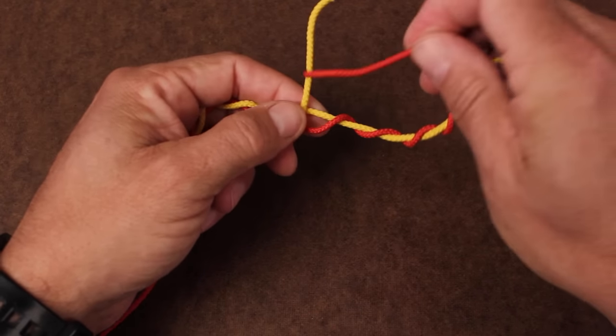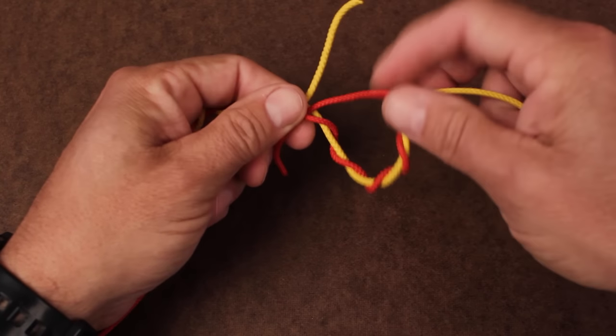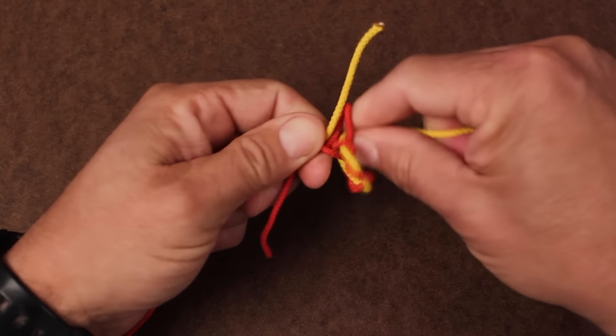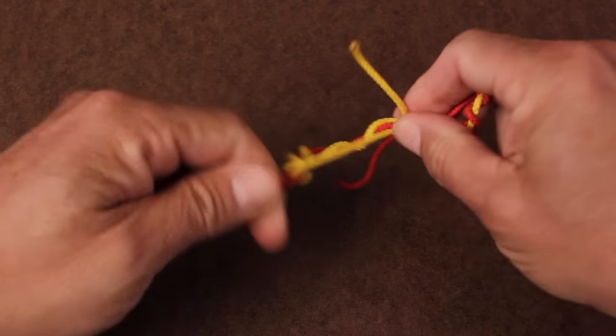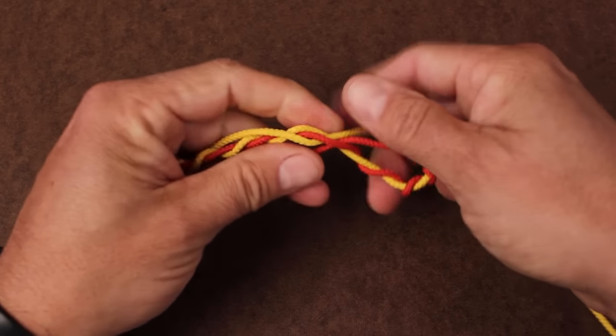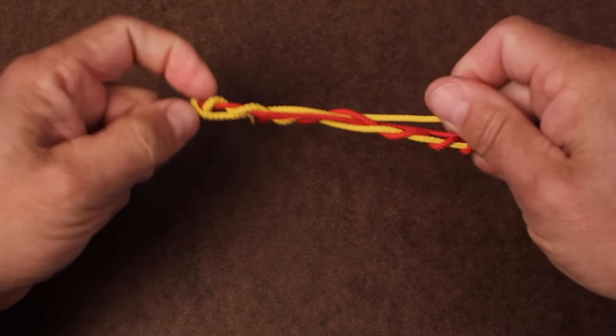Then run the tag end through the open hole at the intersection in the opposite direction as the first tag. While making sure the tags don't pull out, begin to gently draw the knot closed.